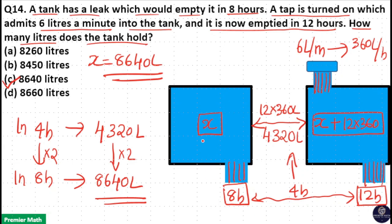So in 8 hours, 8640 liter is emptying. Initial water present is x and which is equal to 8640.